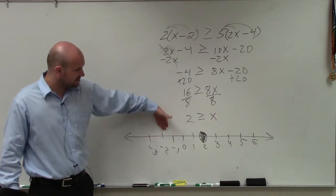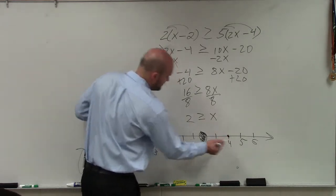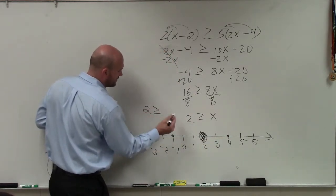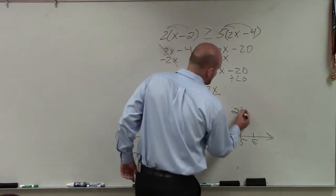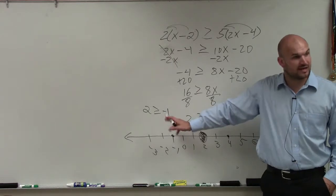So what I like to do is always just pick a point to the left and to the right. So let's pick negative 1 and 4. Now simply just plug those numbers in for x. 2 is greater than or equal to negative 1. 2 is greater than or equal to 4.